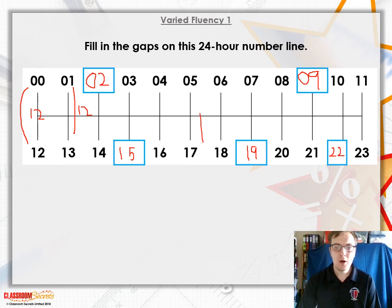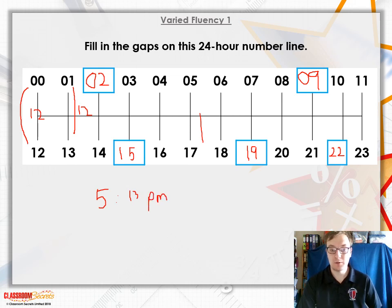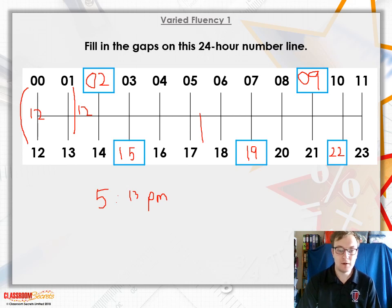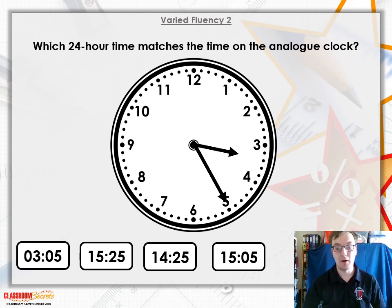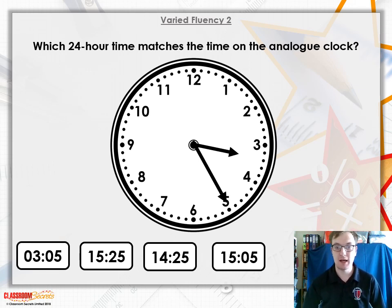For example, if you want to know what 5:13 PM is in 24-hour time, you would add 12 onto your 5 to make it 17, giving you 17:13 — and that is how we write it in 24-hour time. Keep that number line close by because we'll be using it quite a bit in today's lesson.